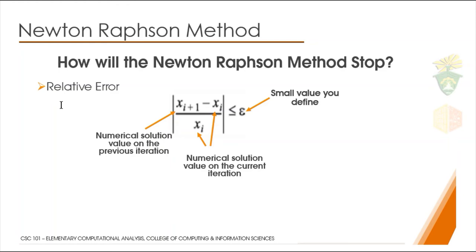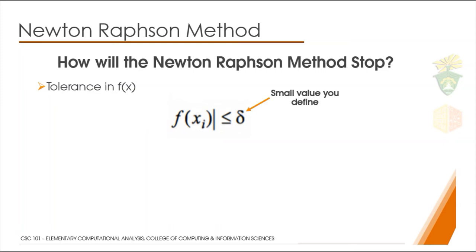If you want to use the relative error to find the error in Newton-Raphson, what you'll do is this: take the x from the previous iteration minus the x from the current iteration, then divide by the previous iteration. The result is the error value. You can indicate and set how small it should be for you to conclude that the answer is okay. If you use tolerance in f(x), take the x sub i that you obtained and put it in f(x) in the function. Then you can indicate how small it should be before you stop.